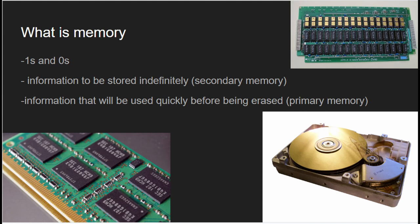What is memory? Computer memory refers to electronic components within a computer system that store and retrieve data on a temporary and permanent basis. Computer memory can be broadly classified into two categories: primary memory, also known as main memory or RAM, and secondary memory, also known as storage.